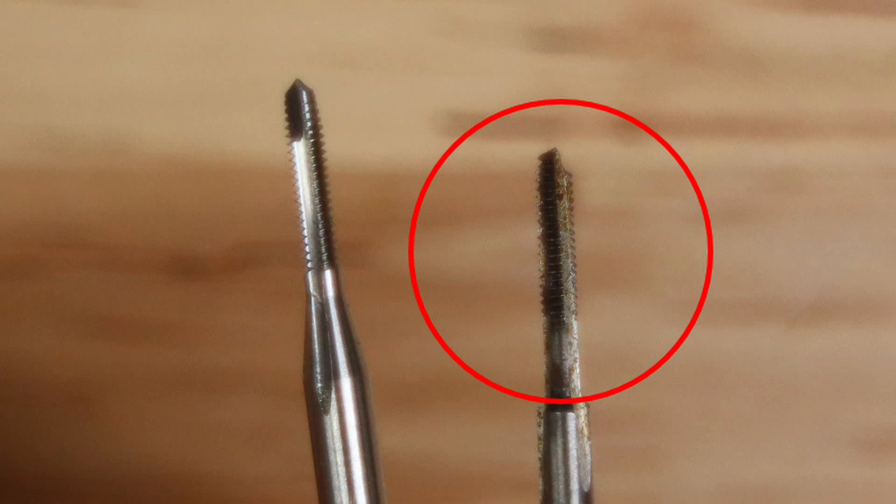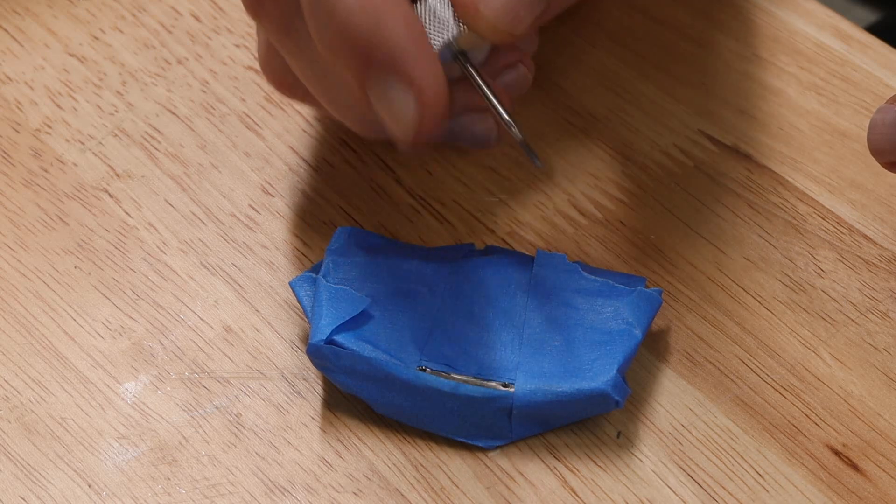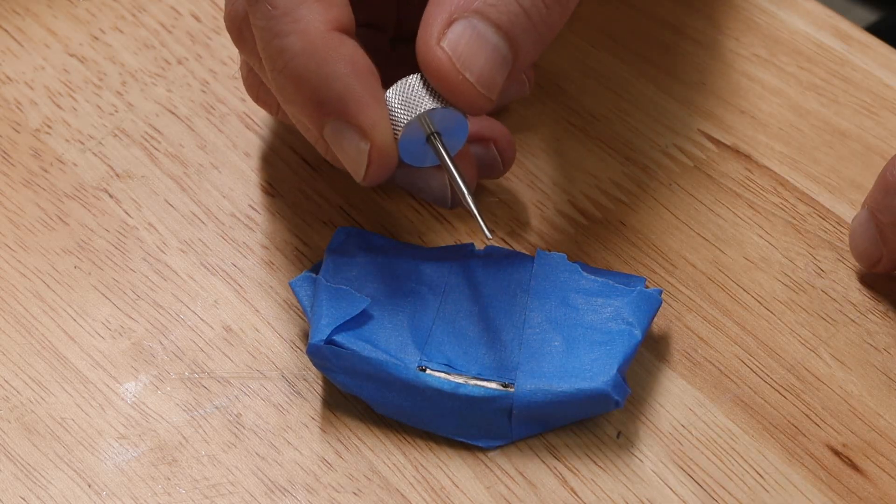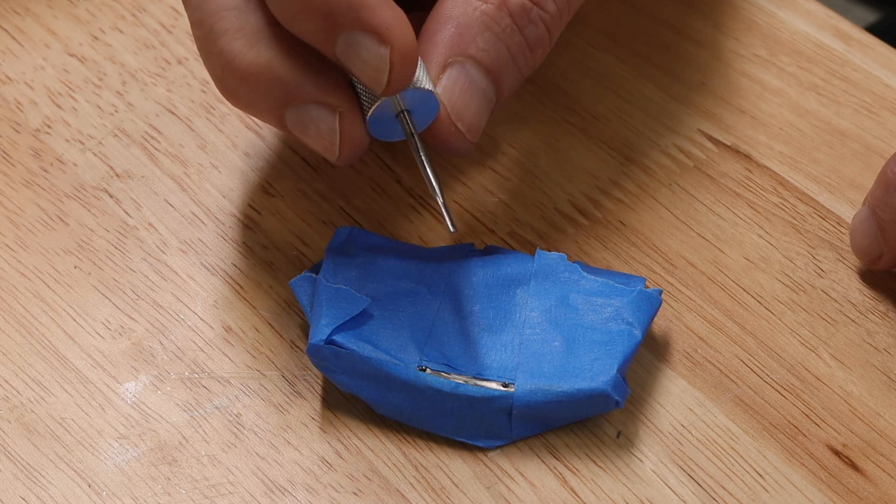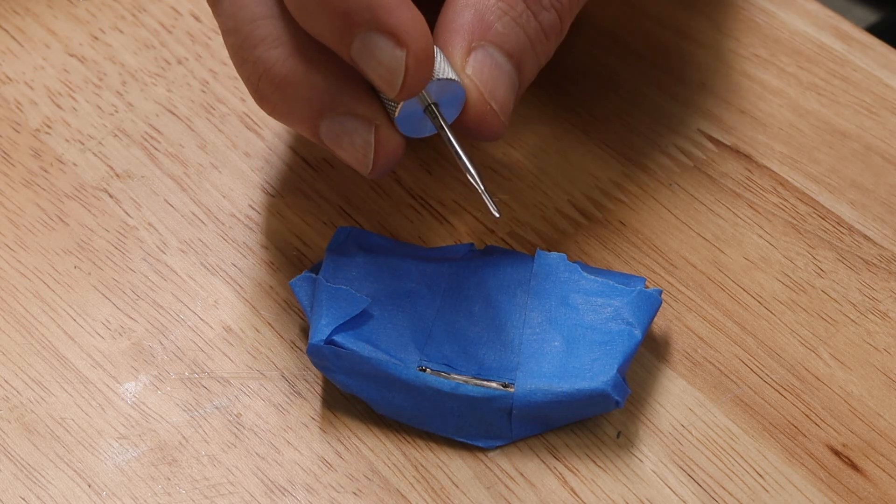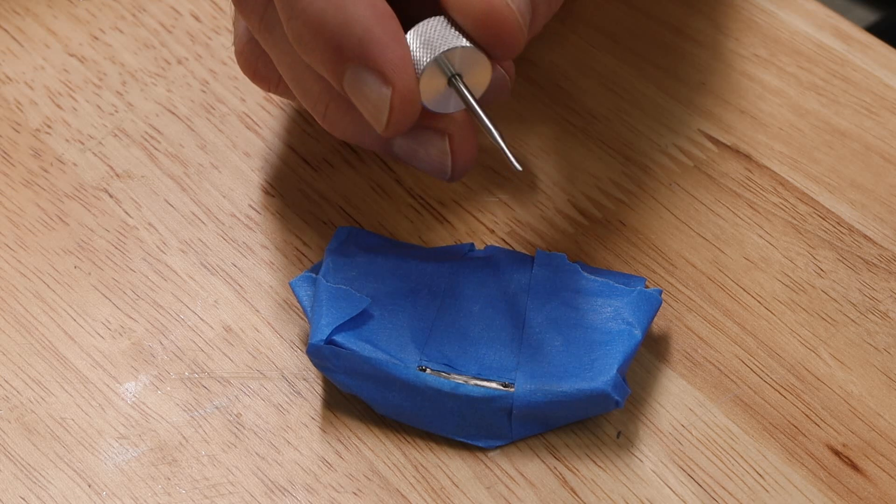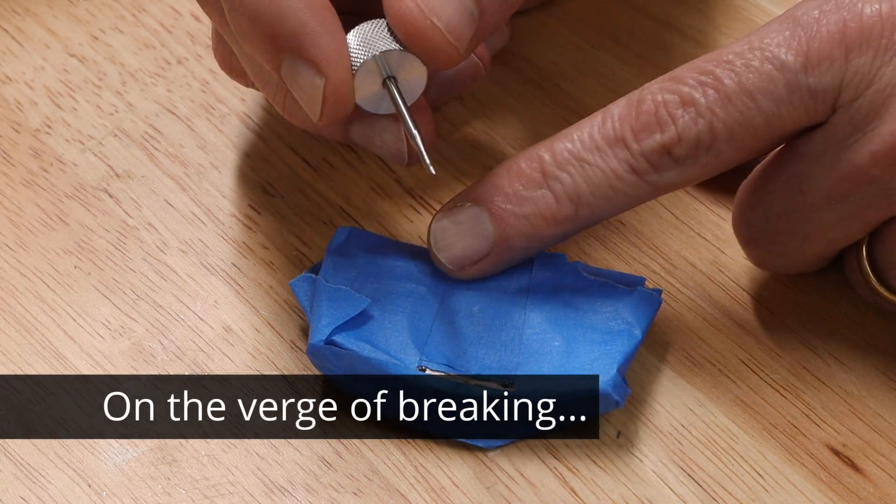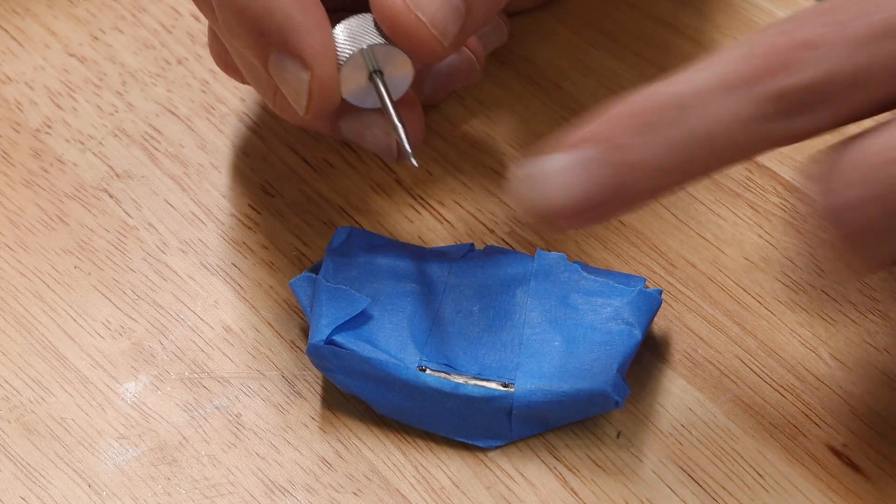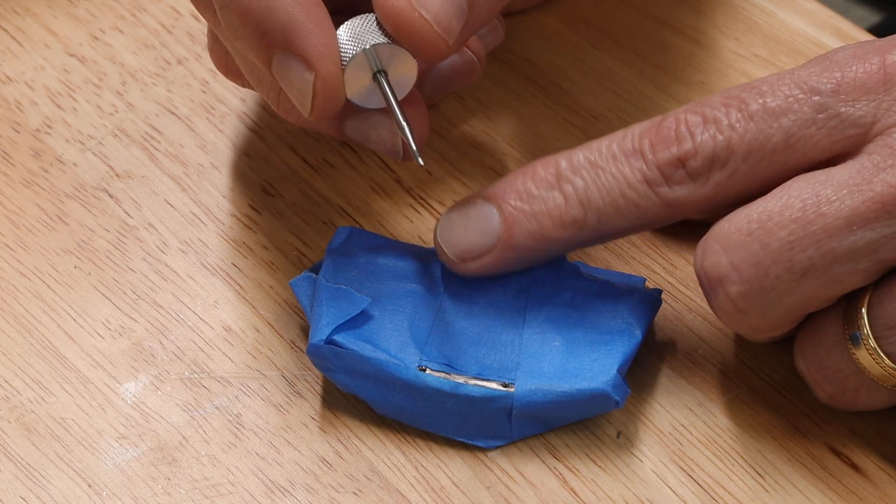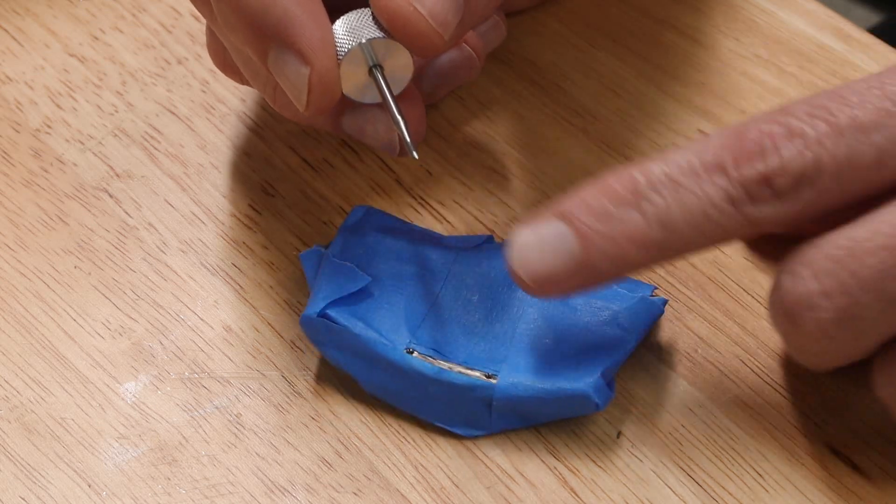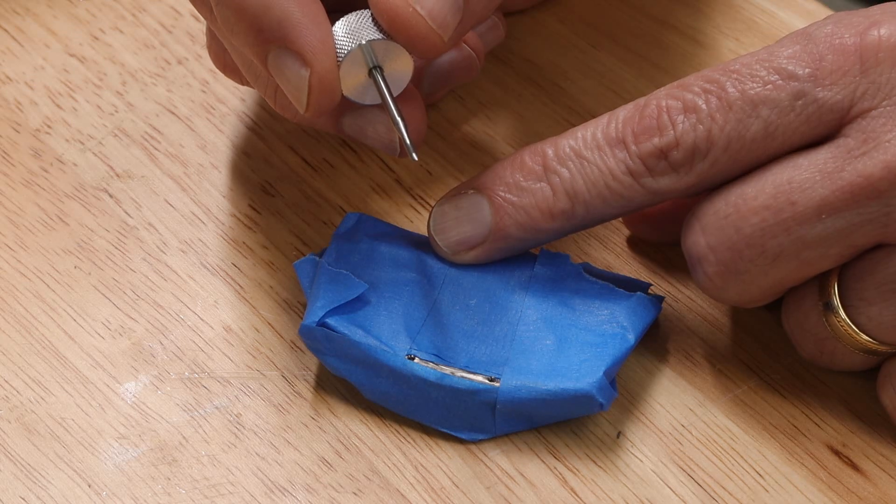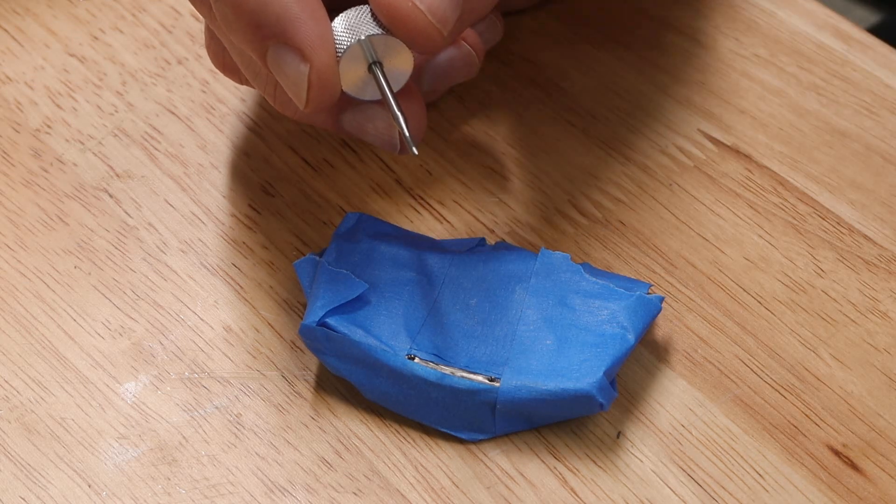When I tried to tap this, it always felt like it was on the verge of breaking, and I think it really was. And because it was a straight flute tap, I had to reverse, and every time I reversed, I could feel that I was also on the verge of breaking. So on this particular part, there's one hole that has the tap broken in it. But that's okay, because this will be used in a display case, and we can basically glue a screw head in place of where one of the screws would have been, and it'll be fine.